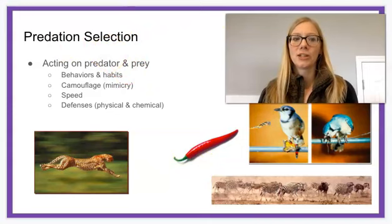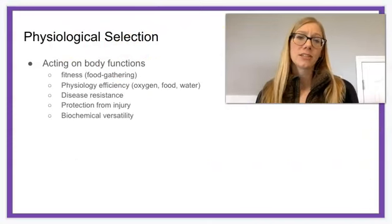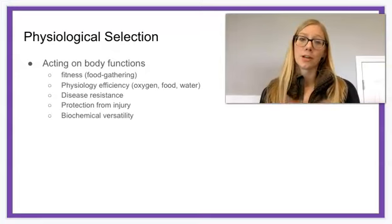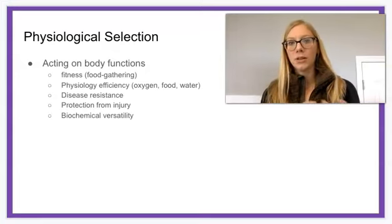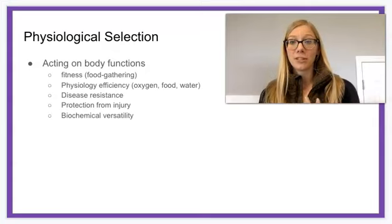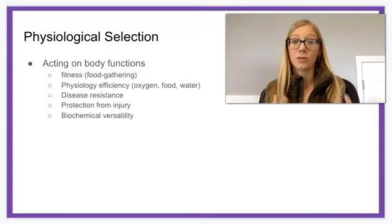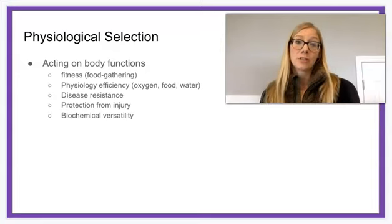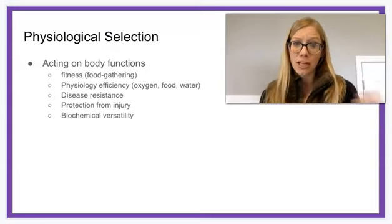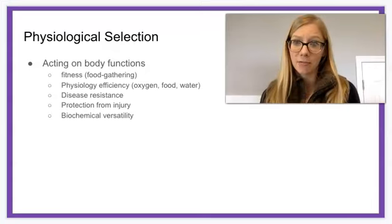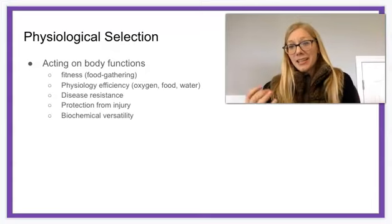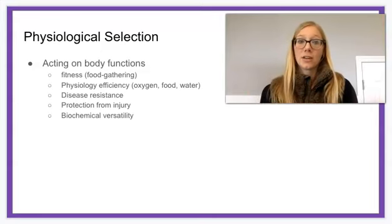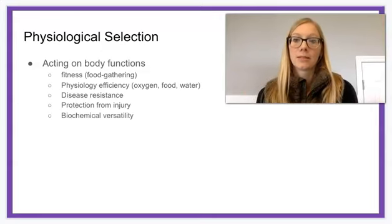That's an example of predation selection. We can also have physiological selection. I kind of like to think about this as the general health: are you healthy? Can you gather food? Can you process oxygen, food, and water efficiently? Can you use it? Do you have some disease resistance? Are you able to have protection from injury or biochemical versatility within you? I think of this as your general health — do things function in your body or in your organism the way they should?